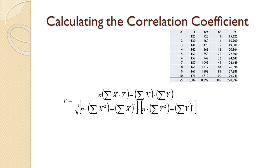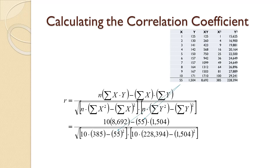All three n's are replaced with 10. The sum of the X's, 55, is used in two places. The sum of the Y's, 1,504, is also used in two places. The sum of the X times Y's, 8,692, is used in one place.